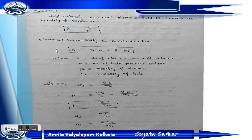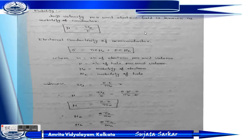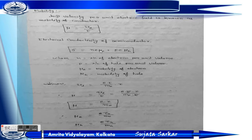Now we will learn what is mobility. Drift velocity per unit electric field is known as the mobility of a conductor, denoted as mu: μ = vd / E. For the electrical conductivity of a semiconductor, there are two types of charge carriers — holes and electrons. So sigma equals n·e·μe (mobility of electrons) plus p·e·μh (mobility of holes).